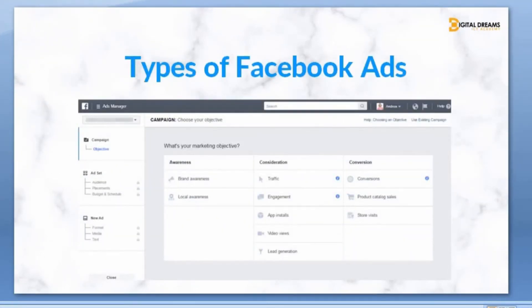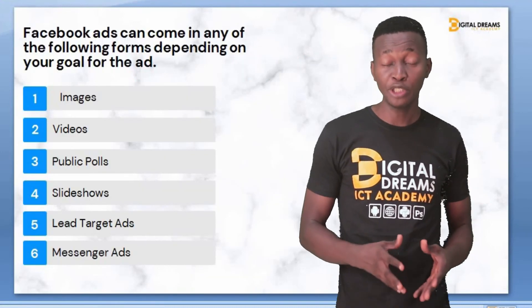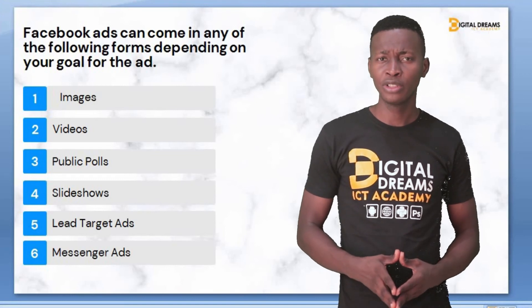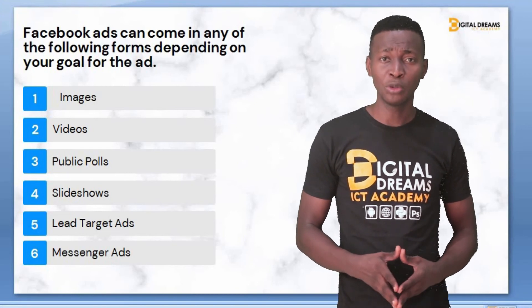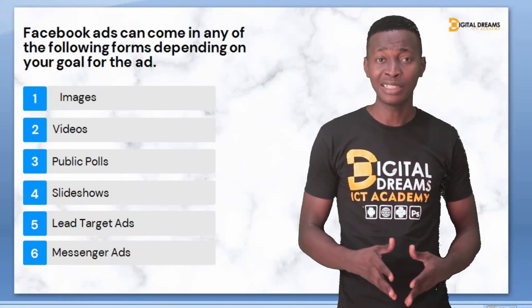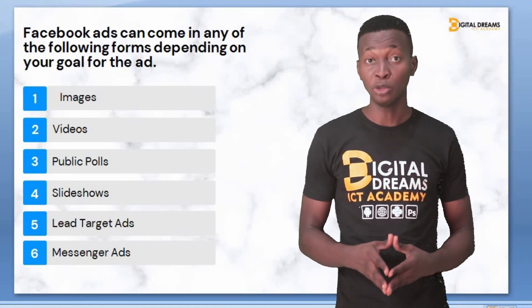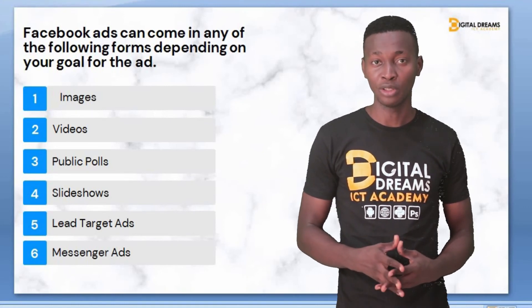Looking at the types of Facebook ads gives us a better picture of how Facebook advertising works. Facebook advertising can come in the form of a picture, a text, a picture with text, videos, posts, leads, slideshows, and instant videos that people can use to advertise their products.